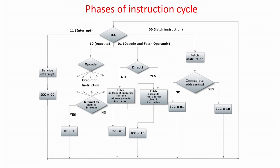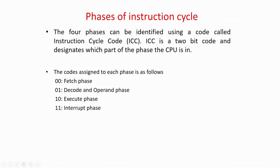There is something called the Instruction Cycle Code (ICC) — a 2-bit code that determines what stage of the instruction cycle you are in: fetch, decode, execute, or interrupt. The encoding is: 00 = fetch, 01 = decode and operand fetch, 10 = execute, 11 = interrupt. Generally we talk about fetch, decode, execute — where decode includes operand fetch.